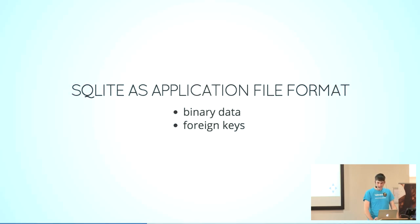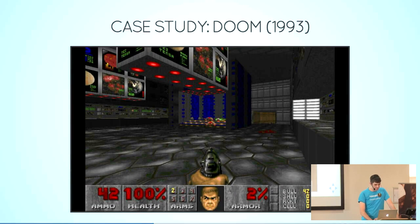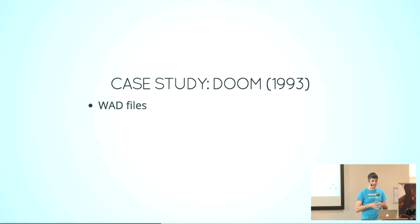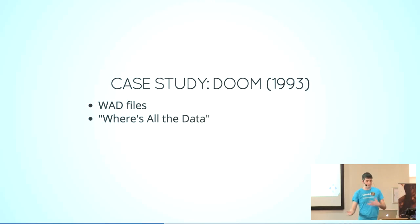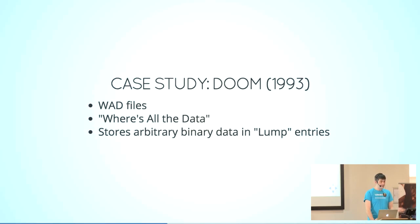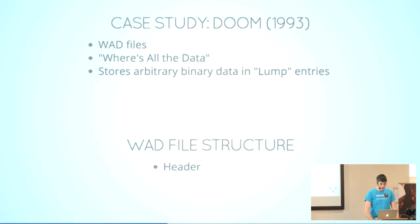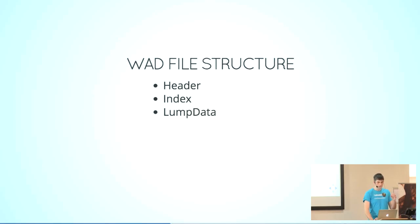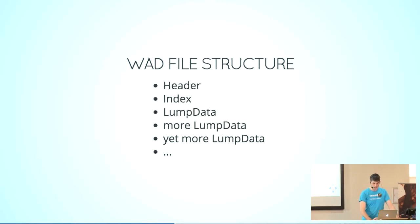When Doom came out, it came out a few years before SQLite was created. What Doom came up with was a thing called the WAD file. A WAD file is exactly what I was describing — it's something that is relational and stores binary data. The WAD file stores all that binary data in things called lumps — just binary chunks. The WAD file structure is very simplistic: it's just a header, the header points to an index, and the index in turn points to lumps.